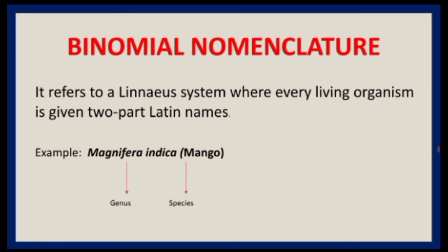Examples of binomial names: Homo sapiens for humans — Homo is the genus, sapiens is the species. The domestic dog is Canis familiaris — Canis is the genus, familiaris is the species. The house fowl is Gallus domesticus.